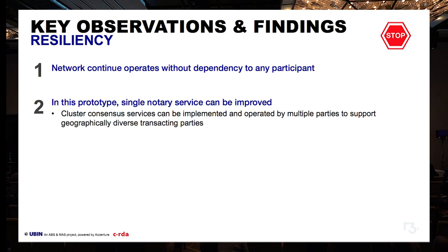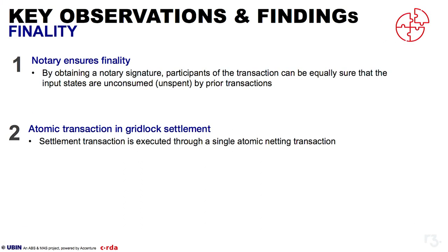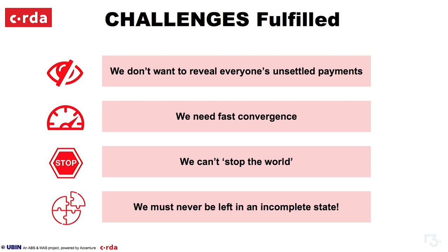The network continues to operate without dependency on any participant — something achieved on Corda that not every other DLT platform in this project could claim. The notary ensured finality by obtaining a notary signature, with all participants needing to sign, and the atomic nature of gridlock settlement. Only Corda was able to have an atomic transaction as part of the LSM settlement. We essentially fulfilled all these challenges, which come clearly in the report in terms of privacy, scalability, resilience, and finality.